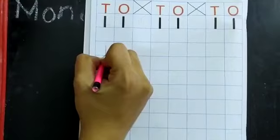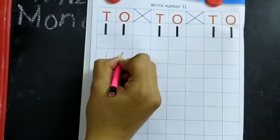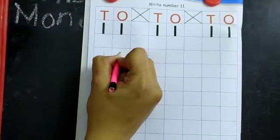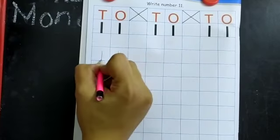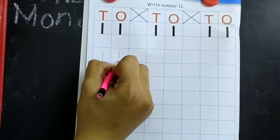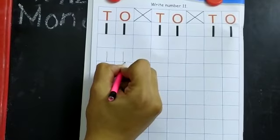One standing line, that is number 1. And again one standing line, again number 1. That is 1, 1, 11. 1, 1, 11.